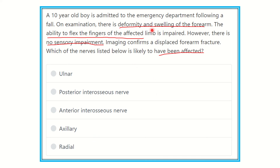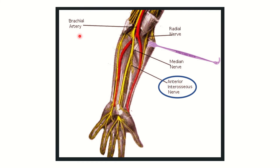We need to find the correct answer. There is deformity and swelling of the forearm and impaired flexion, so the flexor group of muscles and the nerve supplying them would be injured. Looking at the flexor aspect, we can see different muscles. The nerve supply here is the anterior interosseous nerve, which is a branch of the median nerve, along with the ulnar nerve.